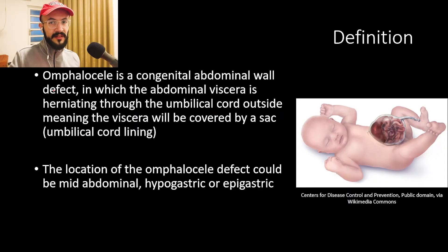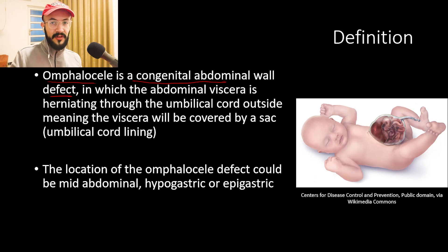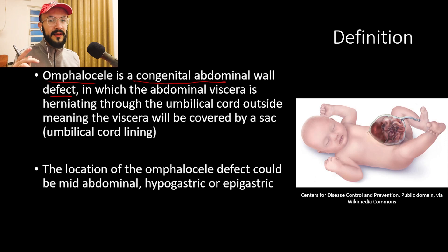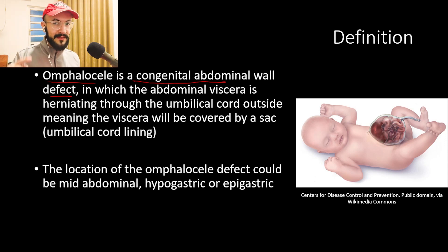Starting with the definition: Omphalocele is a congenital abdominal wall defect. Regarding congenital abdominal wall defects in pediatrics, we have two: gastroschisis, which was explained in the previous video, and omphalocele, which we will explain in this video.